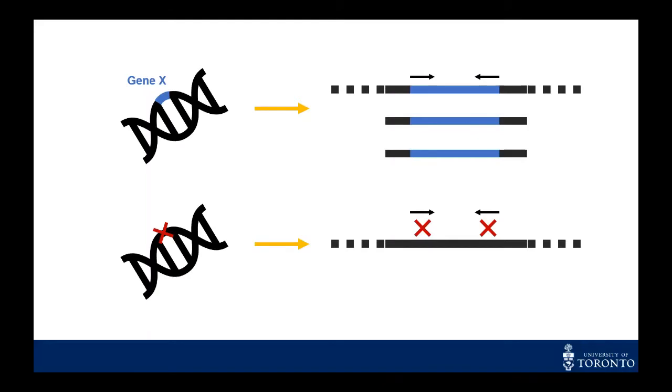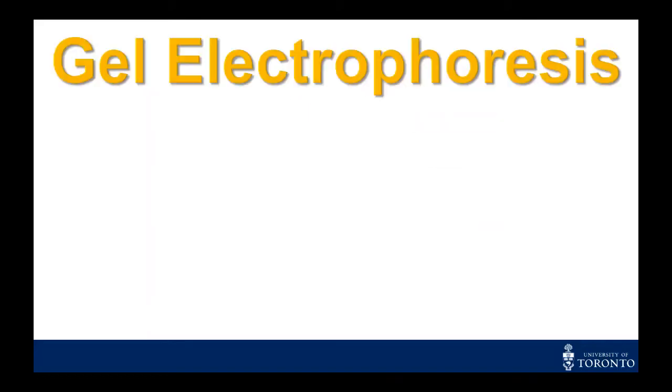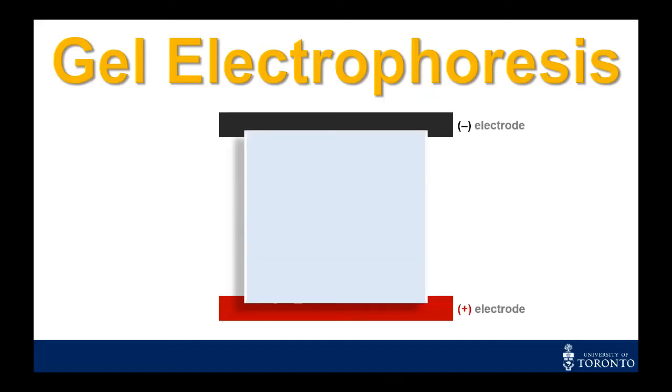After we run PCR, how do we know which samples have copies and which ones don't? To find out, we can perform gel electrophoresis. We can run our samples in a gel and apply an electric current. Since DNA is negatively charged, it's attracted towards the positive electrode. The gel also separates the DNA by size, since smaller pieces can move faster through the gel than longer pieces.